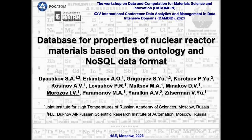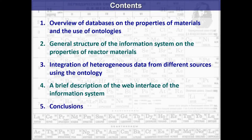This is a new type of database which we wanted to try because many of these techniques are already known, but in this combination this is something new. Our idea was to try this combination of ontology and non-SQL databases for storing information about nuclear reactor materials. First I'll briefly overview the existing solutions and then proceed to the key features of this system, which is still under development. The key features are the connection and linking of heterogeneous data from different sources using ontology, and storing them in a free, mostly customizable format.